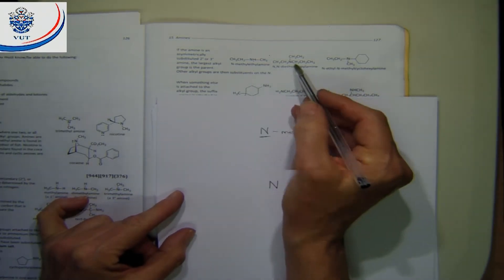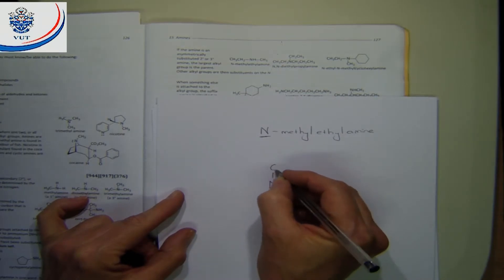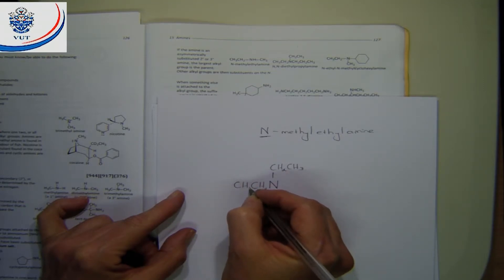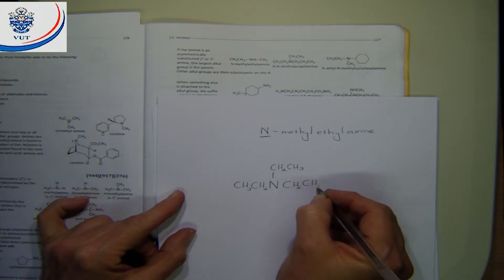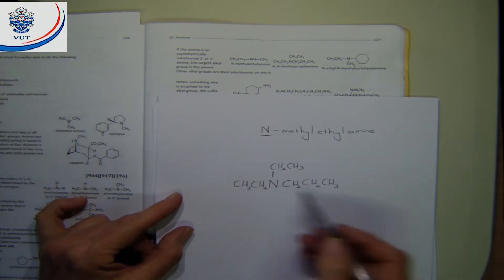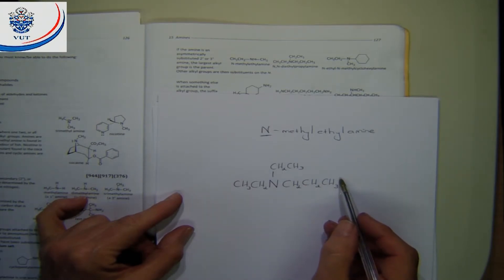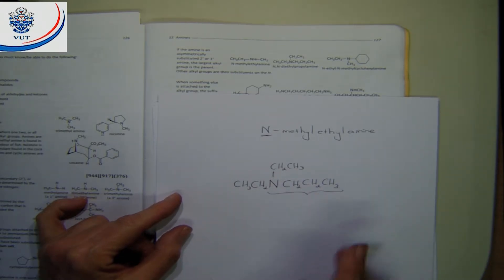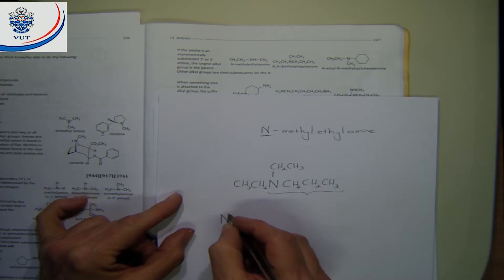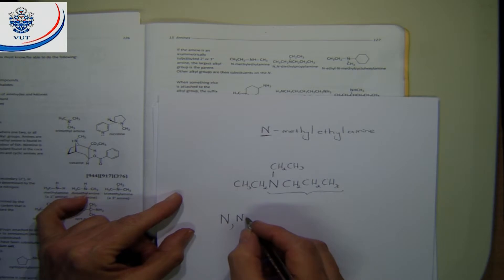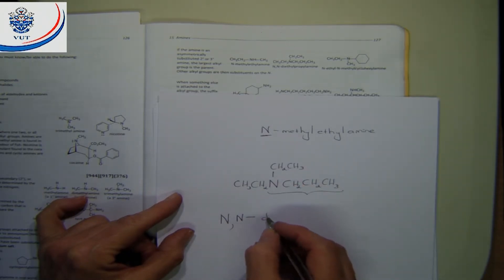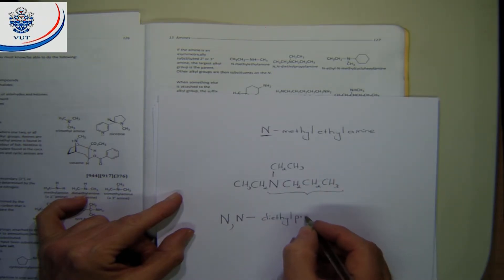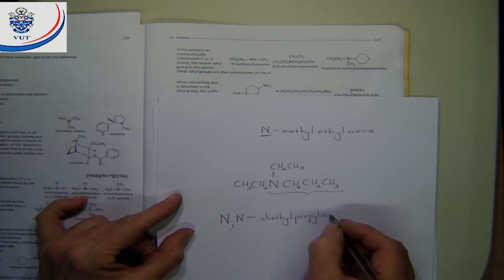Have a look at the next example. You have an ethyl group and another ethyl group and then a propyl group on the nitrogen. Again it is asymmetric. The propyl is the longest, with three carbons, while the others have two carbons each. So propyl will be our parent. Then on the N you have an ethyl and an ethyl — so it's diethyl — and then the parent is propylamine. This gives N,N-diethylpropylamine.